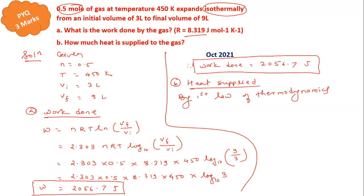We can write Q = ΔU + W. In isothermal conditions, ΔU is coming zero.